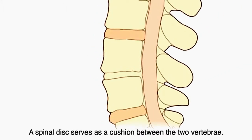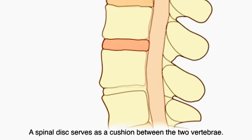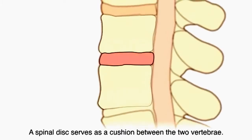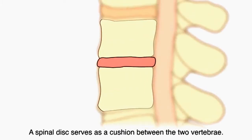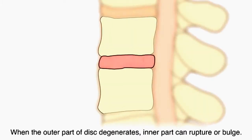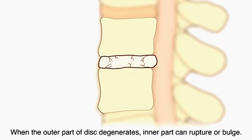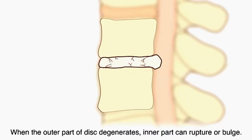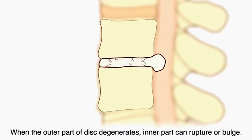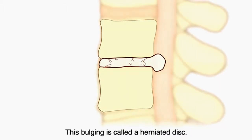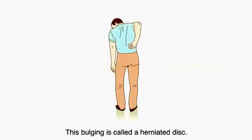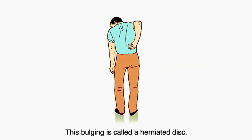A spinal disc serves as a cushion between two vertebrae. When the outer part of the disc degenerates, the inner part can rupture or bulge. This bulging is called a herniated disc.